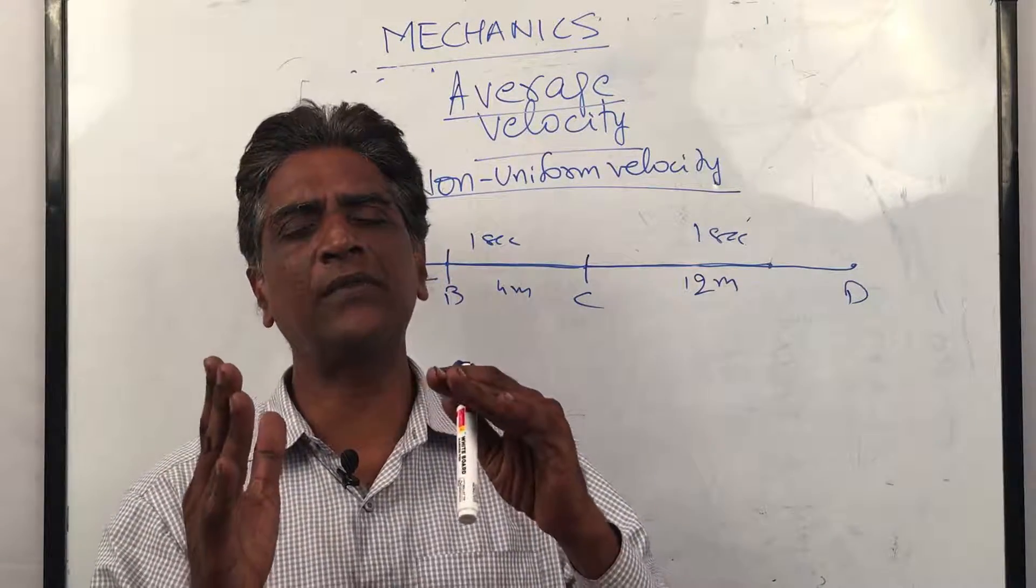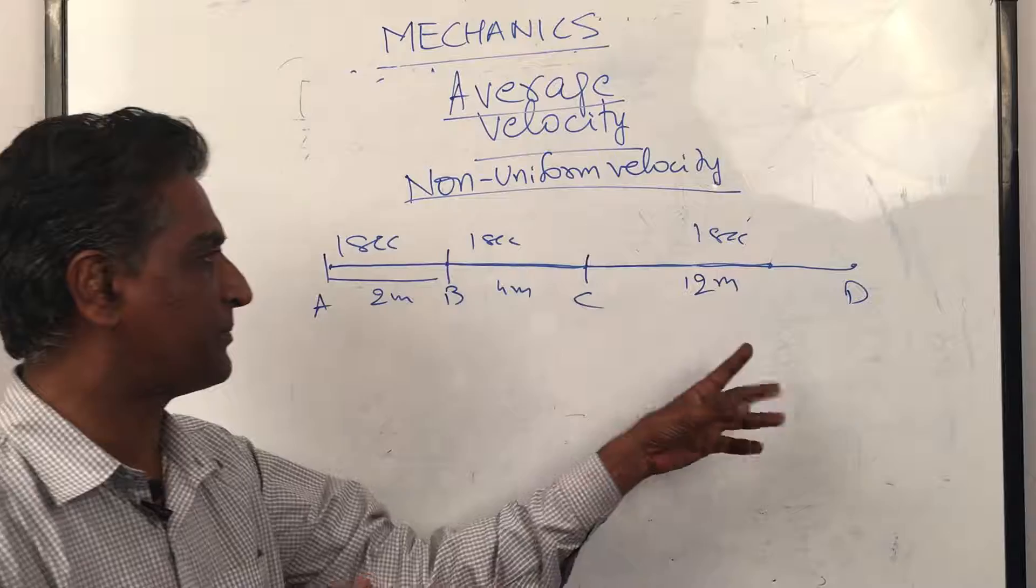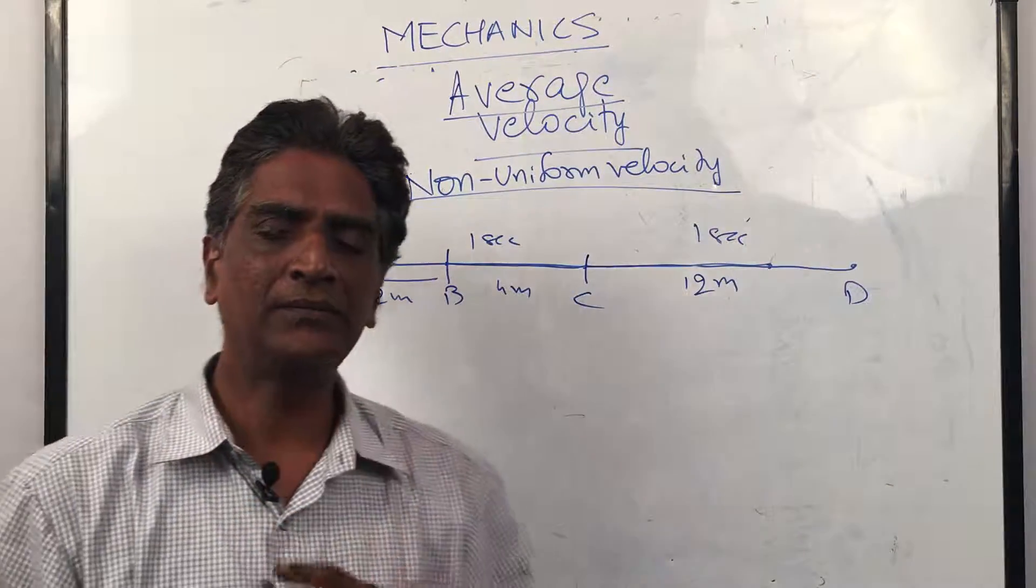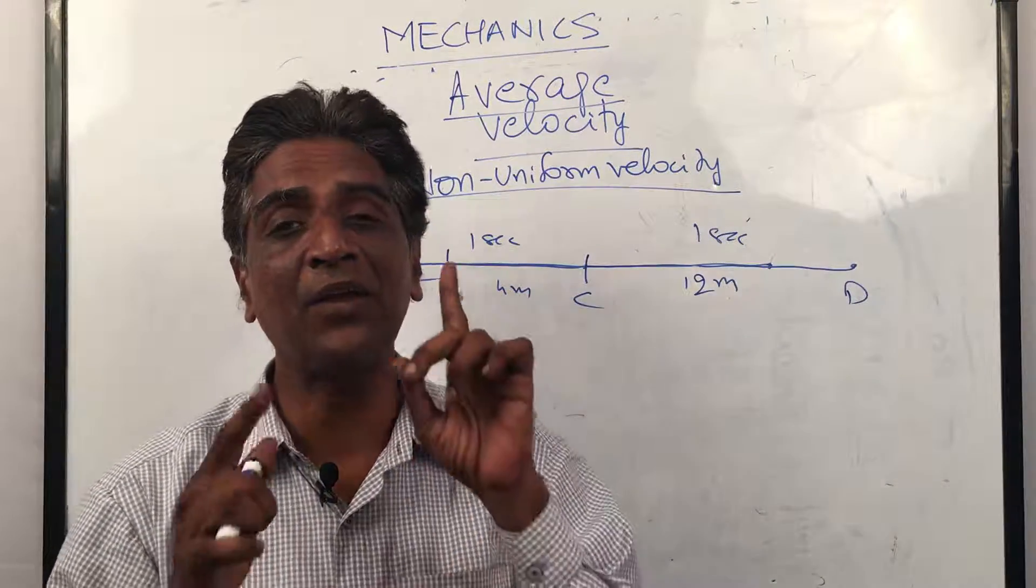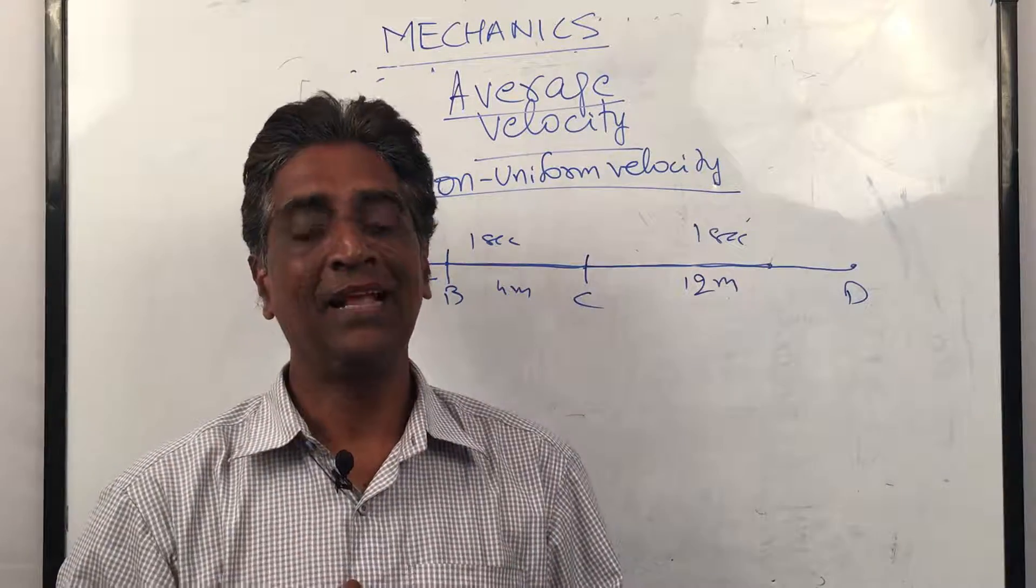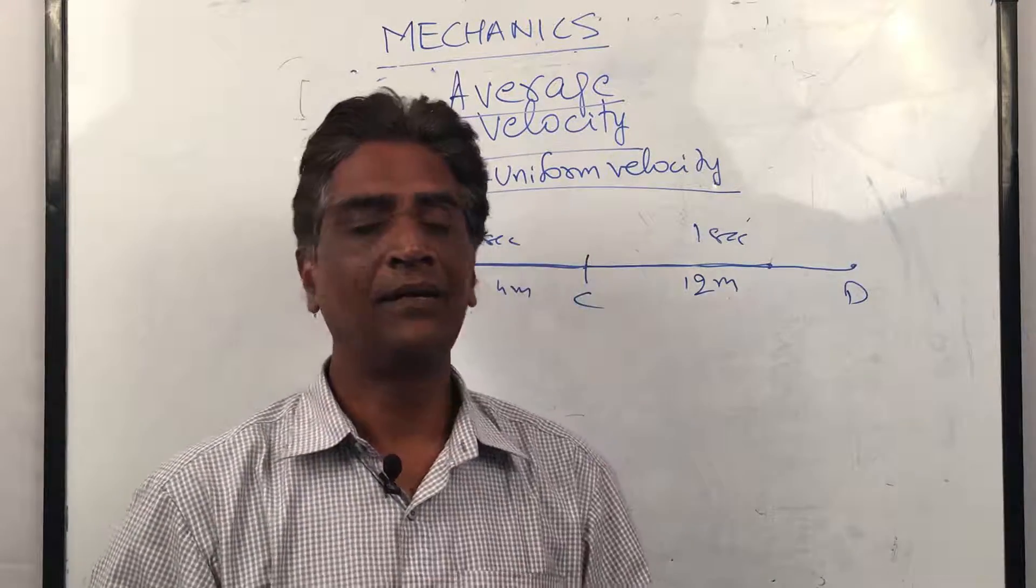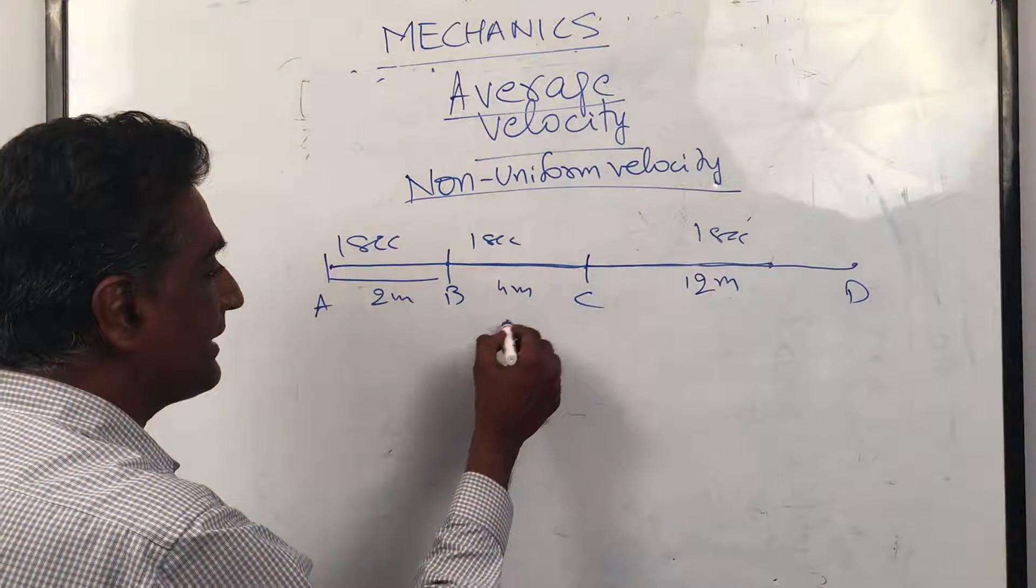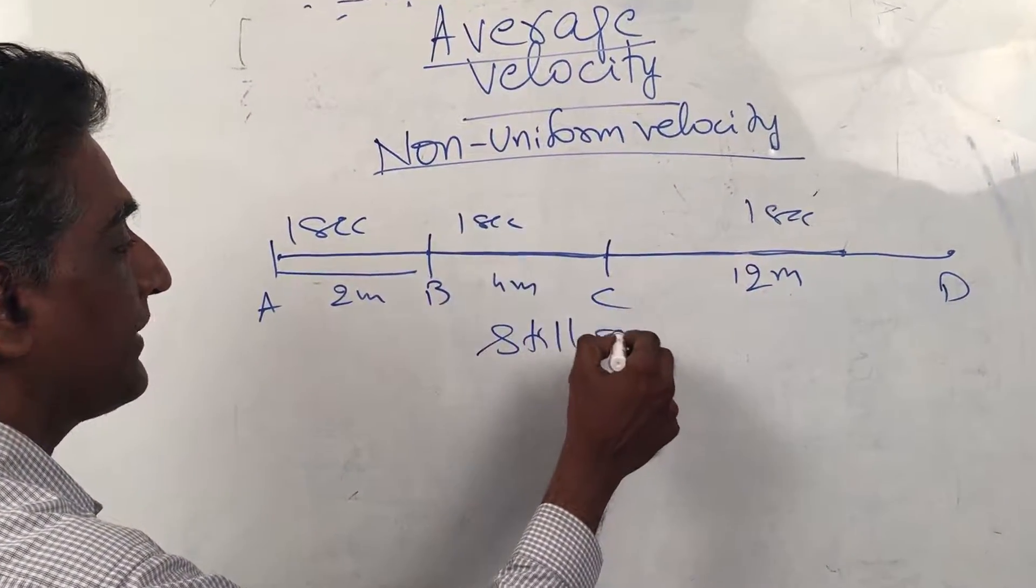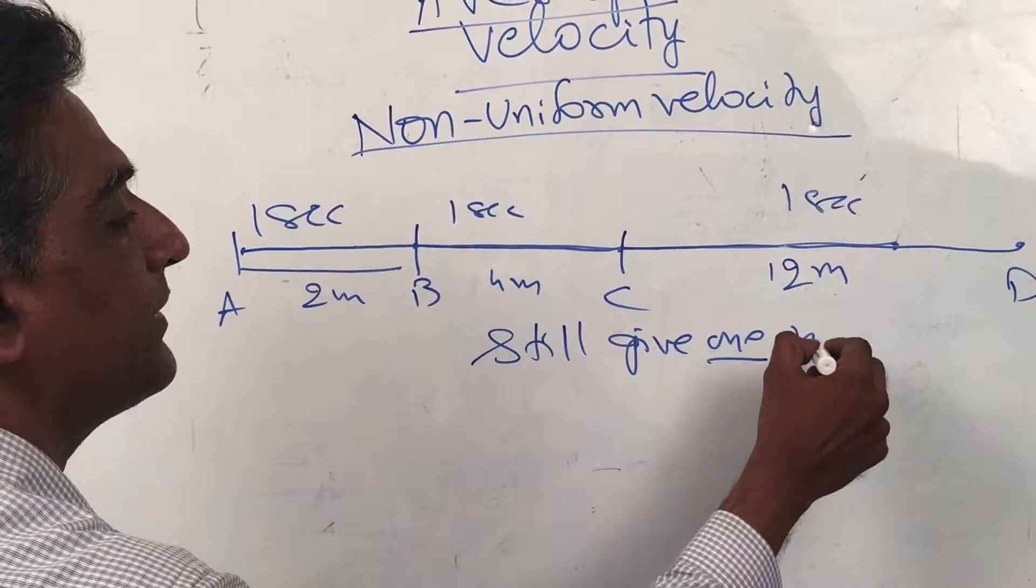I cannot give one number, I cannot give one formula yet. If he says no, I want one formula, then we can still give one. How do we do that? We can take the total displacement.